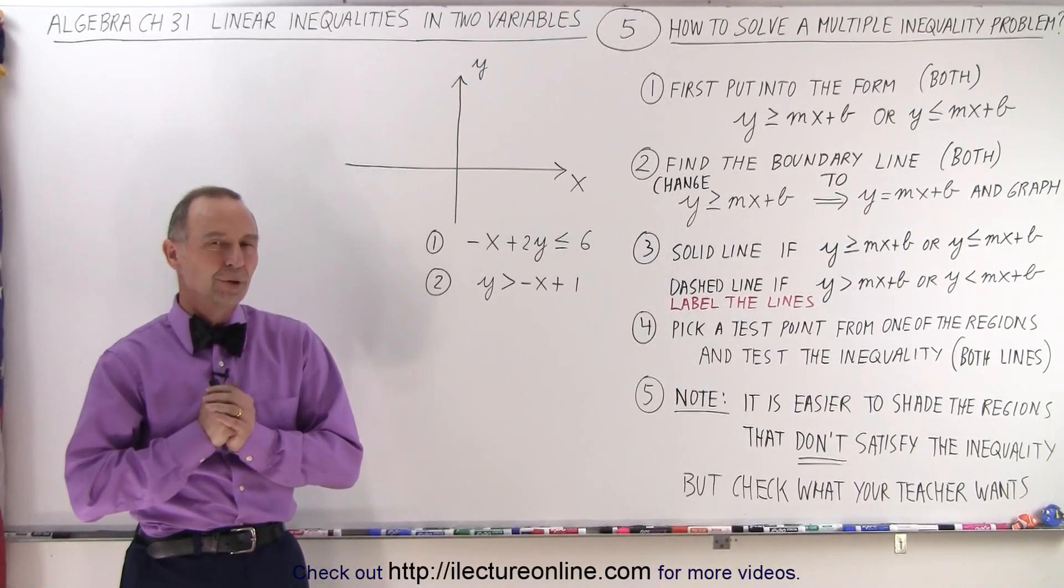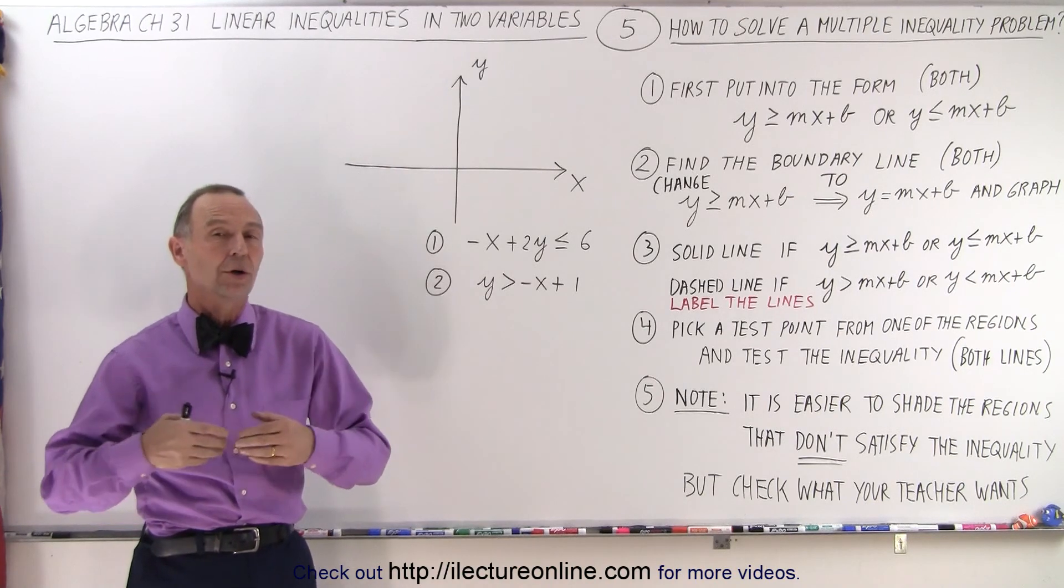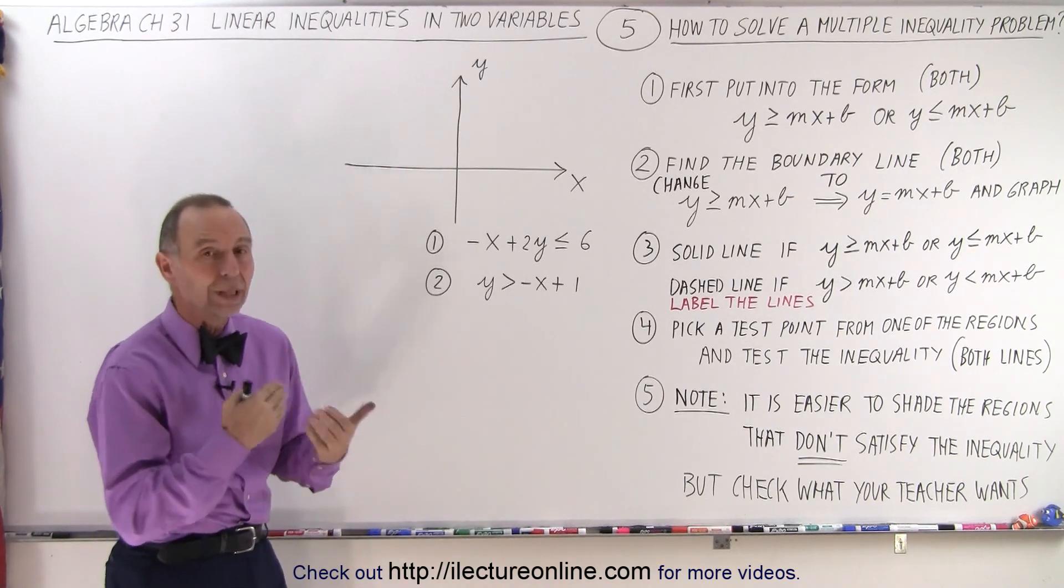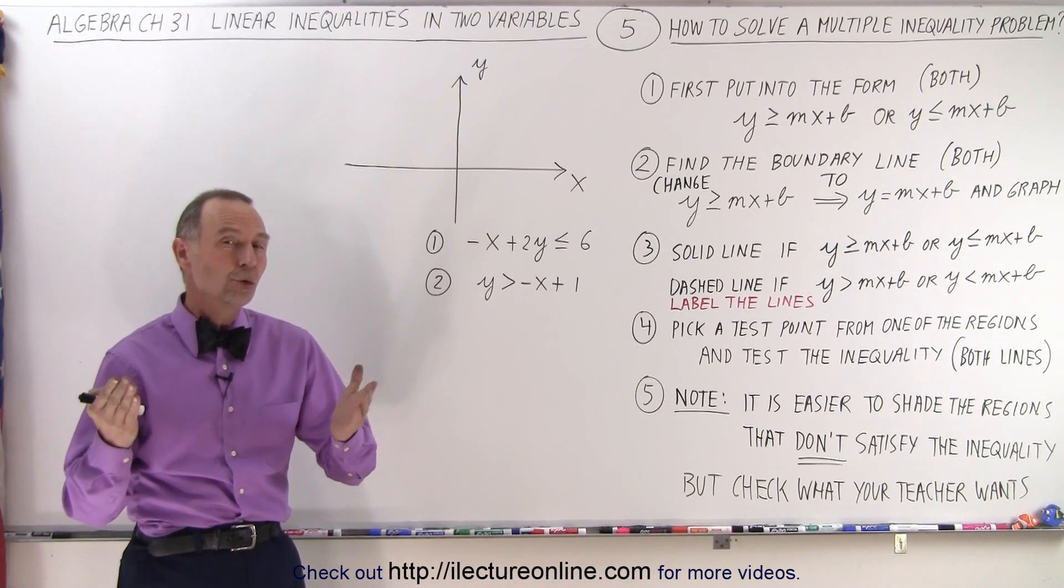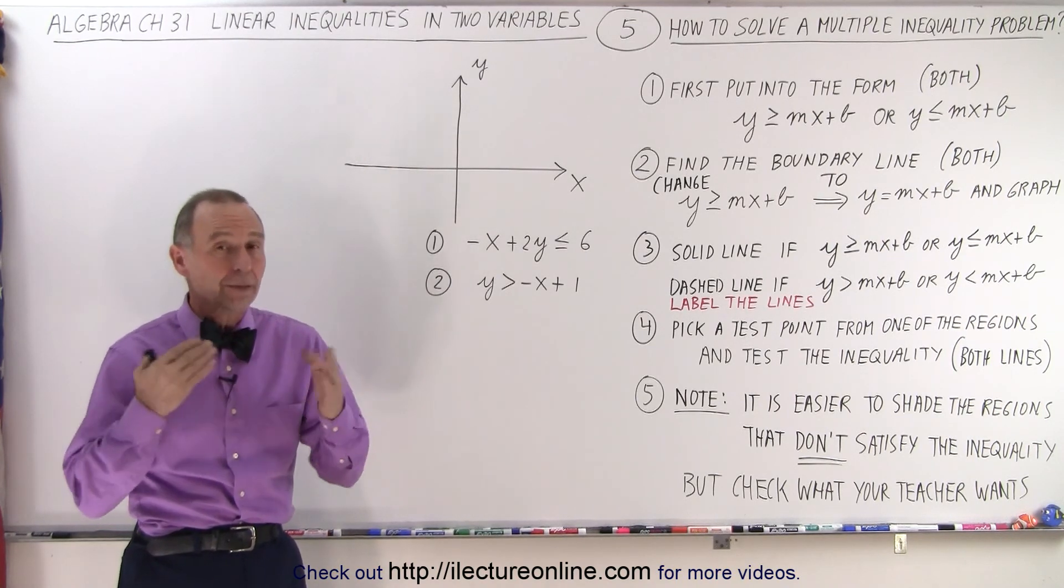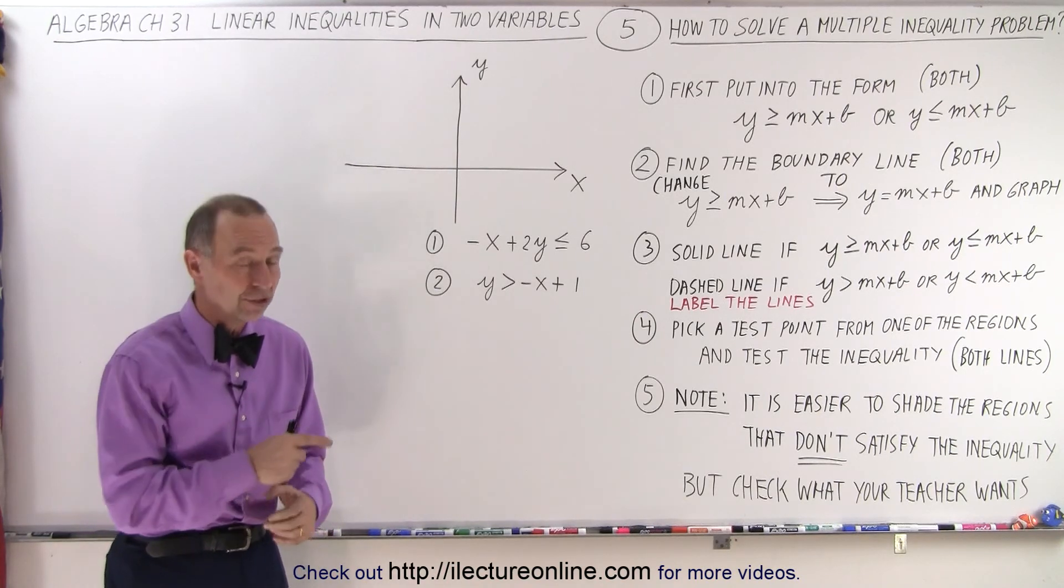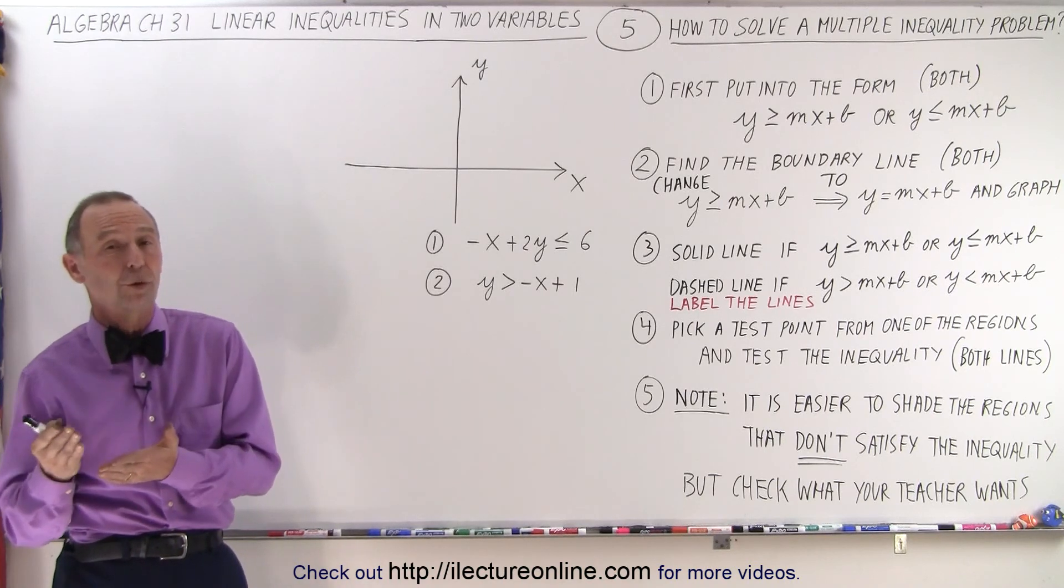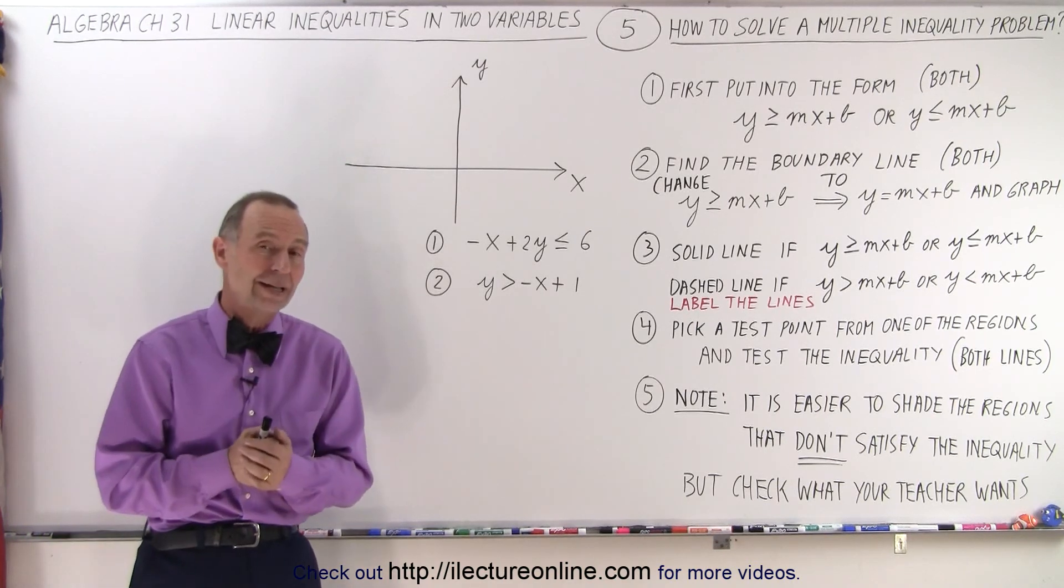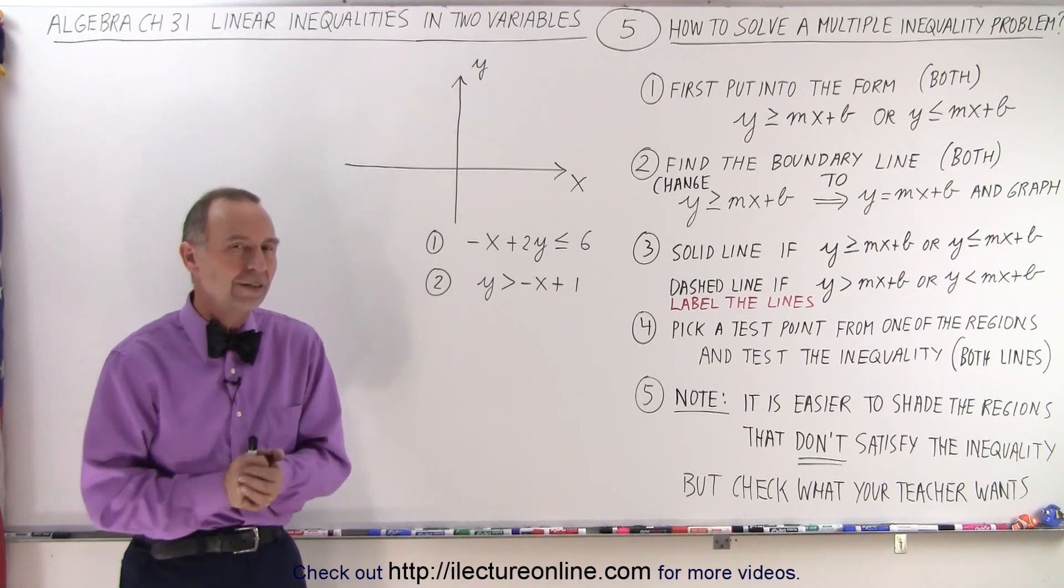Welcome to our lecture online. The more difficult types of problems dealing with inequalities are the type where you have more than one inequality at the same time, and therefore, when the two boundary lines cross each other, you end up with four regions, so you have to figure out which of those four regions satisfy the inequalities, and you have to have them both satisfied at the same time.